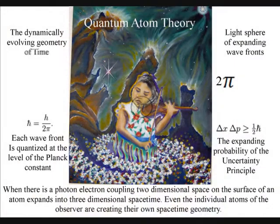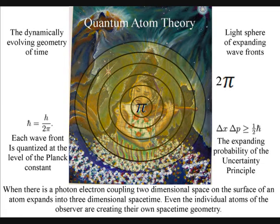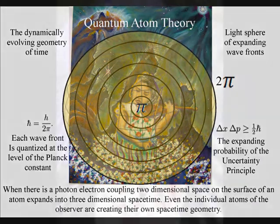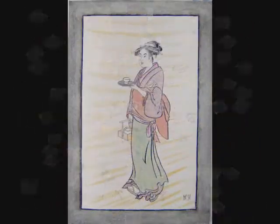The individual observer as a group of atoms is the only true reference frame, because they are creating their own time and space relative to their position and momentum. This is very difficult to visualize, but in this oil painting of a geisha girl walking through sunlight, the wave-particle duality of the light will collapse as she walks through the rays of light. She will collapse the wave function into moments of time and space, creating her own space-time geometry.